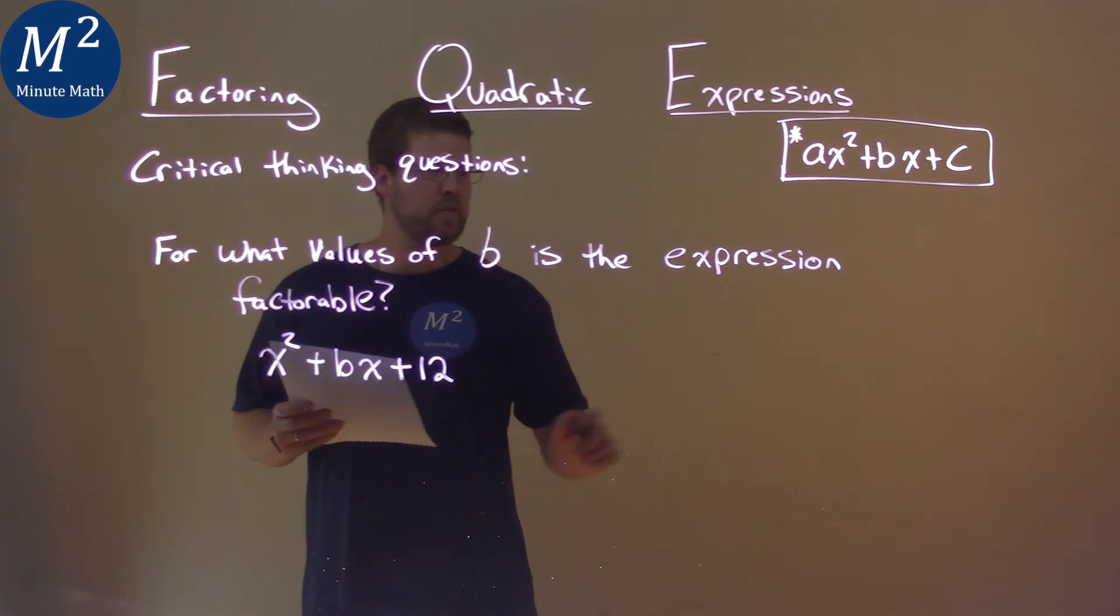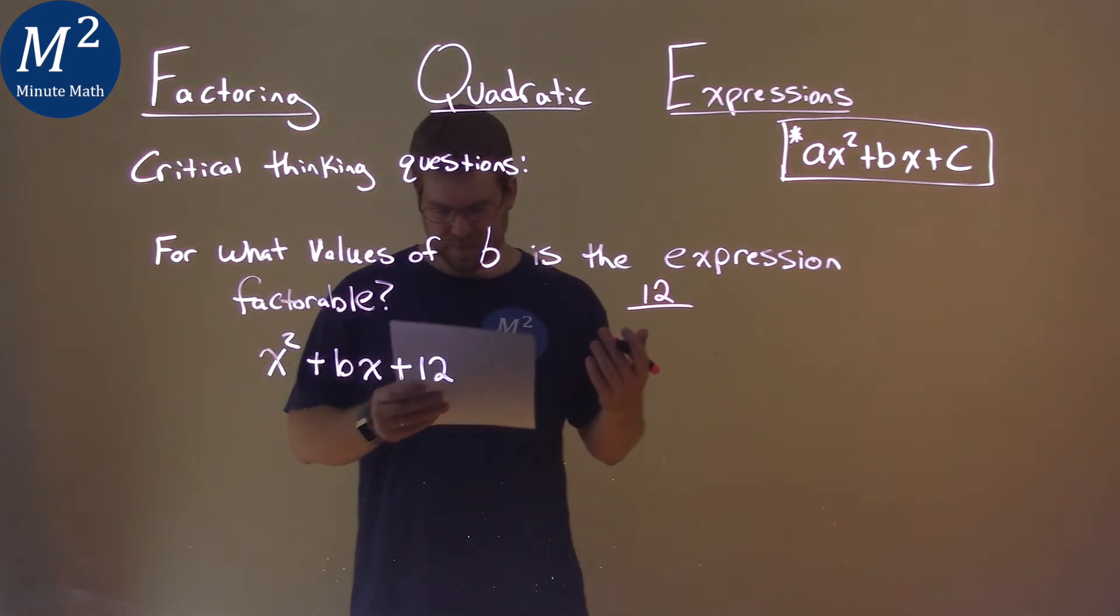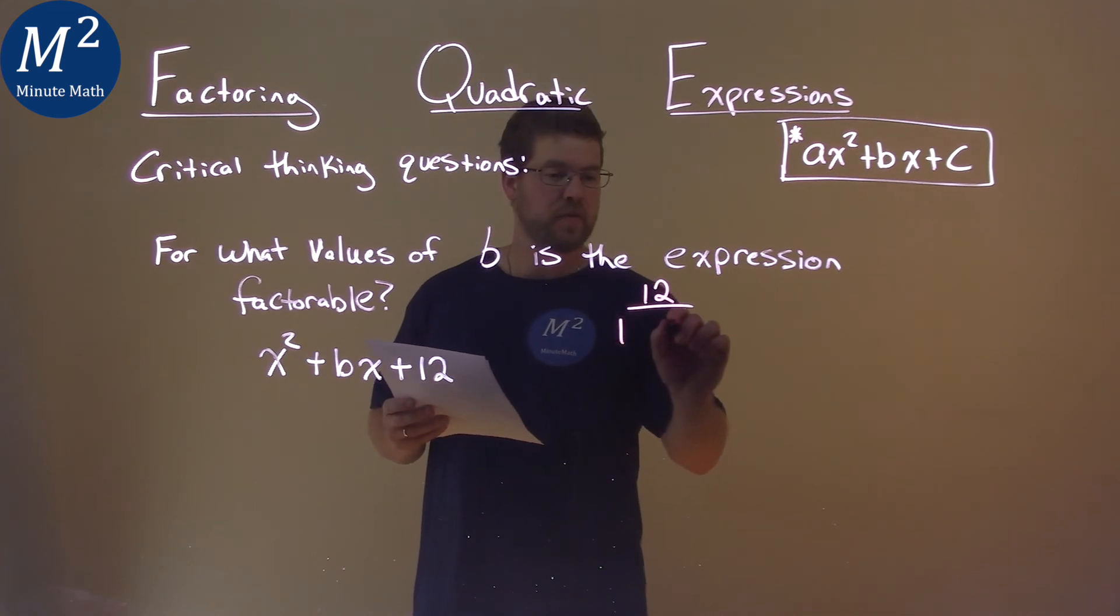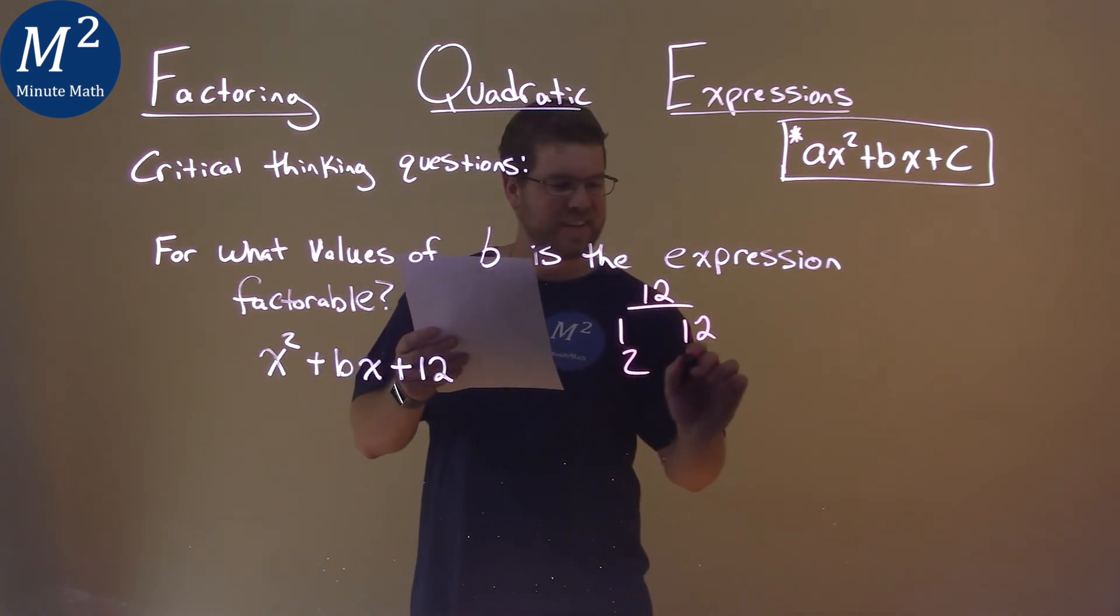We first want to start with our c-value 12. What numbers multiply to be 12? That's 1 and 2, or sorry, not 2, 1 and 12. 2 and 6 and 3 and 4.